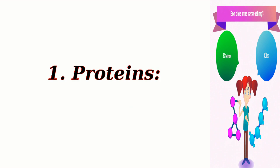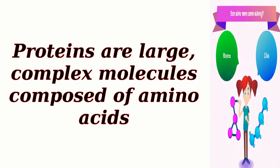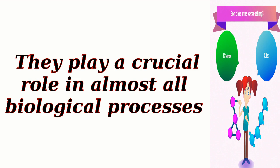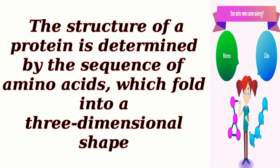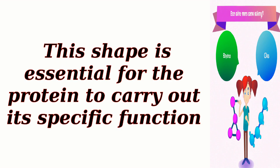1. Proteins. Proteins are large, complex molecules composed of amino acids. They play a crucial role in almost all biological processes. Proteins have a wide range of functions, including enzymatic catalysis, structural support, transportation, defense against pathogens, and cell signaling. The structure of a protein is determined by the sequence of amino acids, which fold into a three-dimensional shape. This shape is essential for the protein to carry out its specific function.